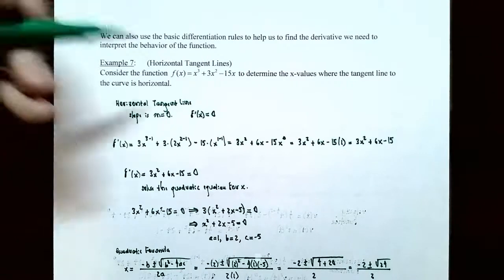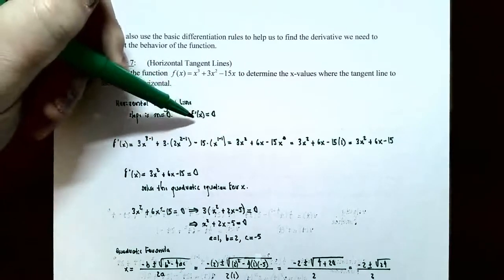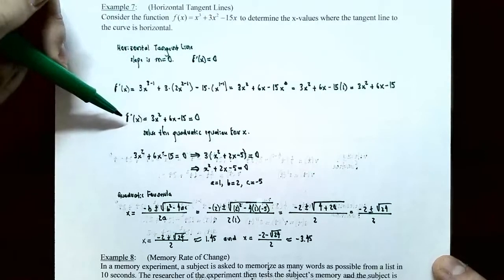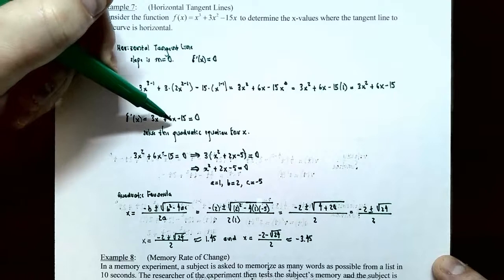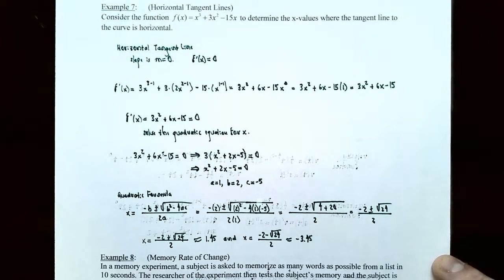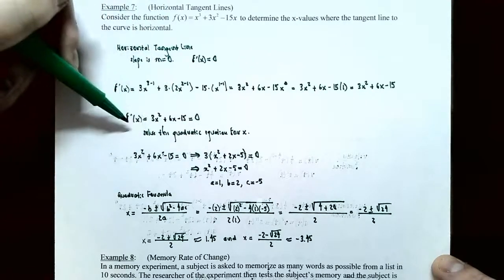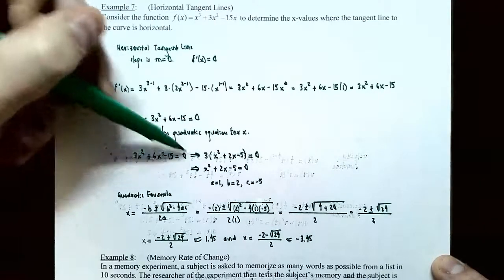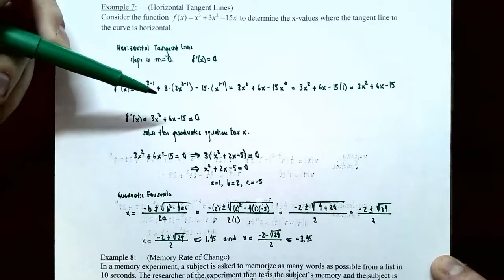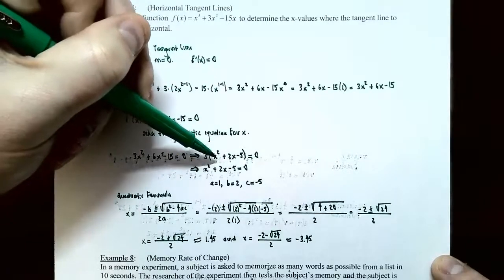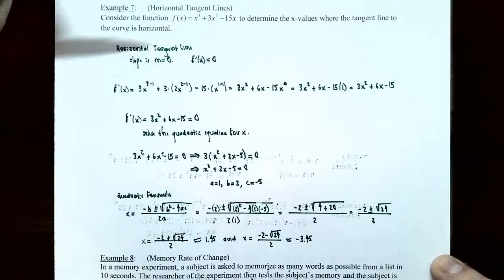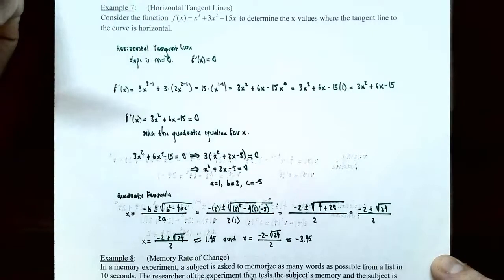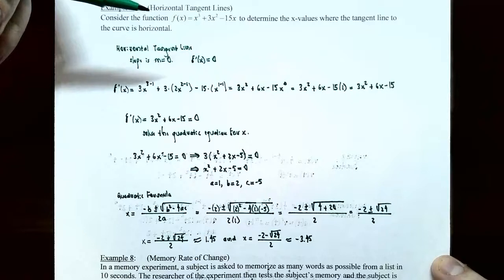Now set the derivative equal to 0 and solve for x. Factor out the GCF of 3: you get 3 times (x squared plus 2x minus 5) equals 0. Trying to find two integers that multiply to negative 5 and add to 2 doesn't work, so we need the quadratic formula. From x squared plus 2x minus 5, the coefficients are a equals 1, b equals 2, and c equals negative 5.